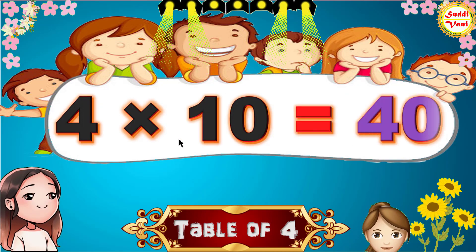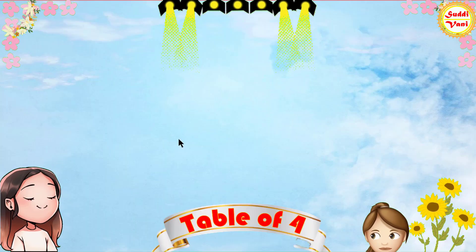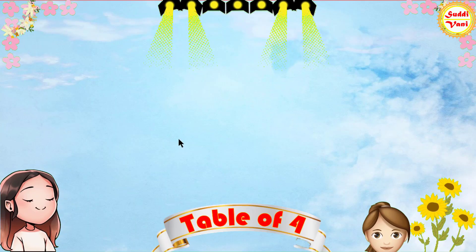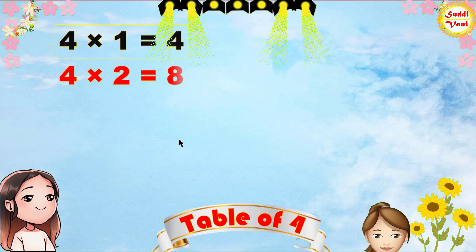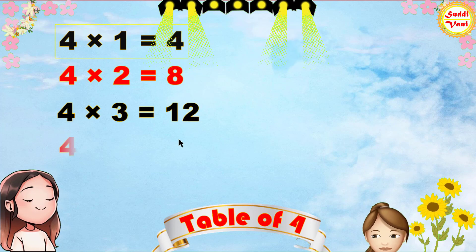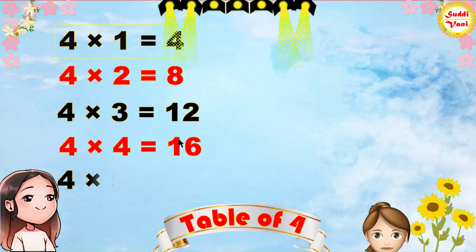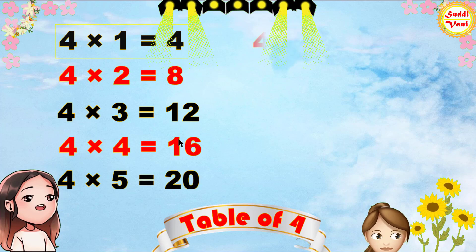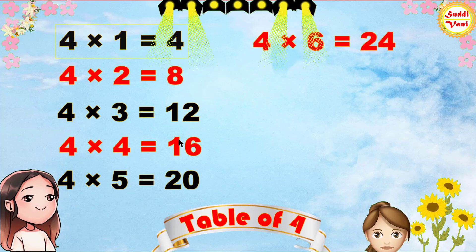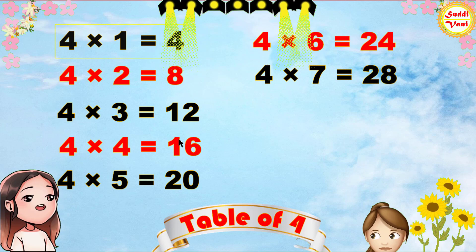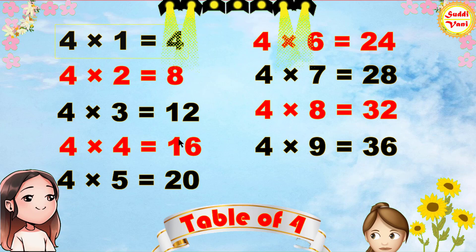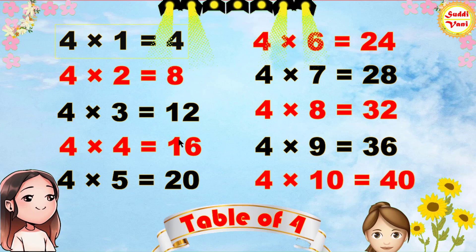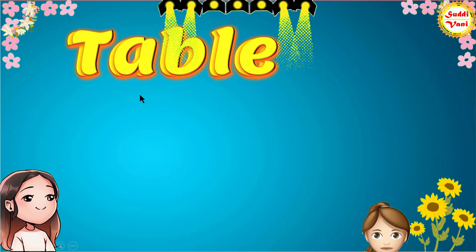4 10s are 40. Once again: 4 1s are 4, 4 2s are 8, 4 3s are 12, 4 4s are 16, 4 5s are 20, 4 6s are 24, 4 7s are 28, 4 8s are 32, 4 9s are 36, 4 10s are 40.